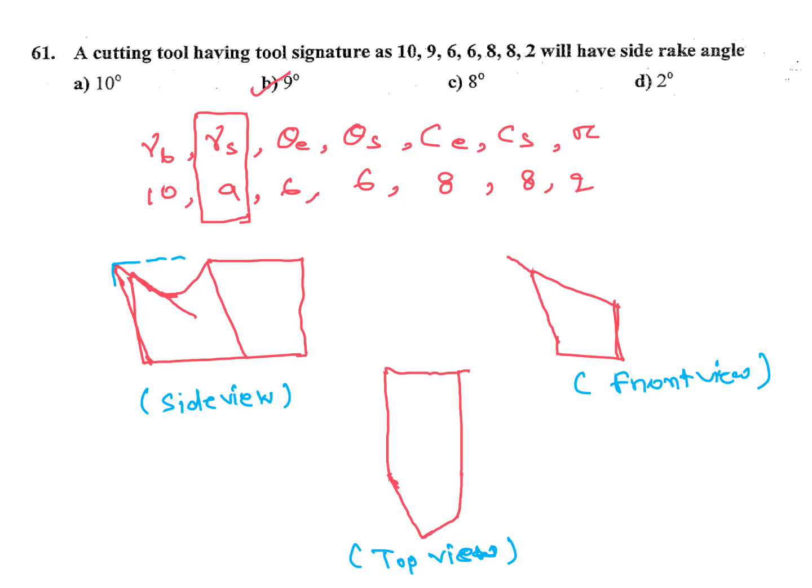Here you will get this angle, this angle, this is gamma B back rake. Here this is end clearance angle theta E.